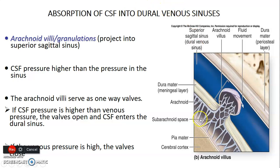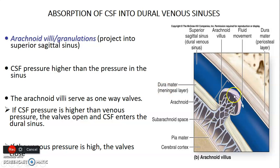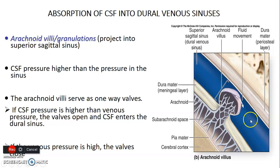Regarding absorption of CSF into dural venous sinuses: from the subarachnoid space, arachnoid granulations project into the superior sagittal sinus. The CSF pressure is higher than the pressure in the venous sinus, allowing flow in one direction — the arachnoid granulations serve as one-way valves. Flow can only go from CSF to the venous sinus. If CSF pressure is higher than venous pressure, the valves open and CSF enters the dural sinus. If venous pressure is higher, the valves close, preventing blood from entering the CSF.